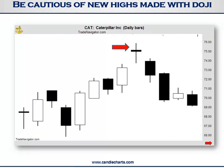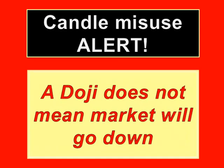A common misuse of the doji is that whenever somebody sees a doji, they think they should immediately go short. However, a doji does not mean the market will necessarily go down — it changes the trend from up to neutral. So a doji does increase the likelihood of a reversal, but it's not a strong reversal signal like some of the other candlestick signals, like an engulfing pattern or dark cloud cover.